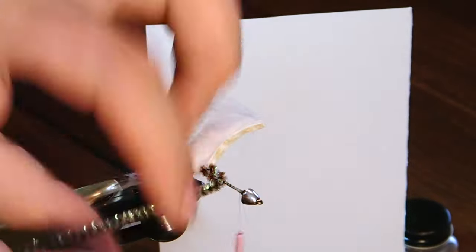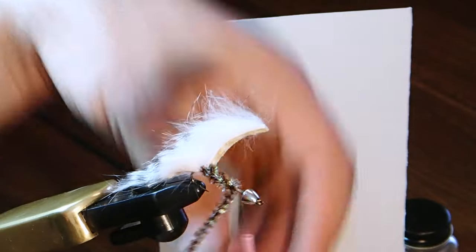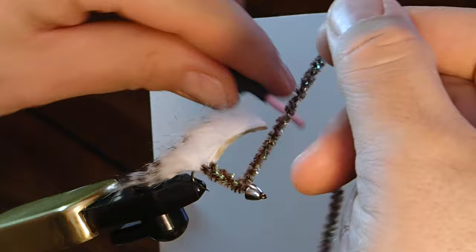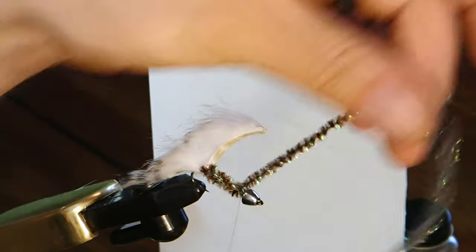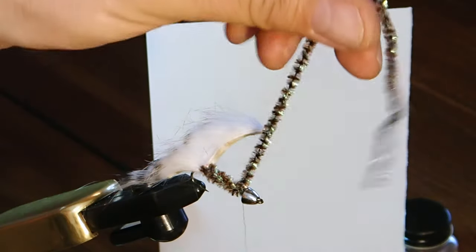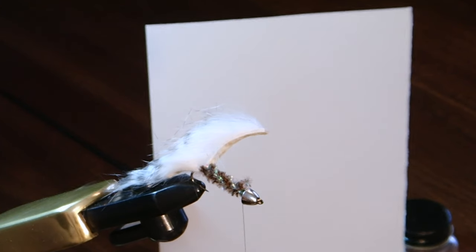And it's about as simple a streamer as I've done. And then we'll just secure it down here, a couple of ties, took a couple of wraps to secure that off, trim it, and now we're ready to select some hen hackle for the collar.